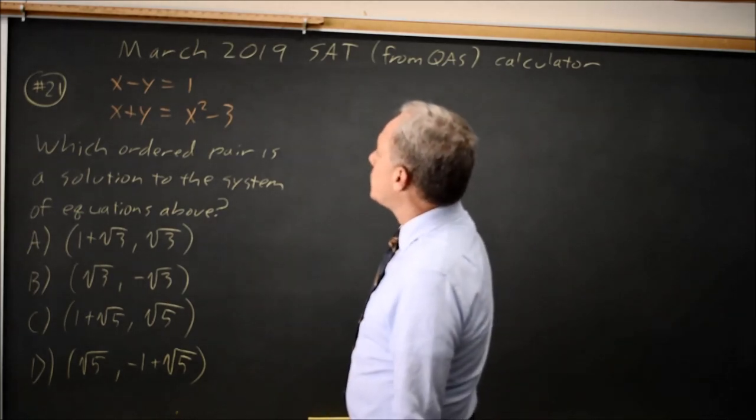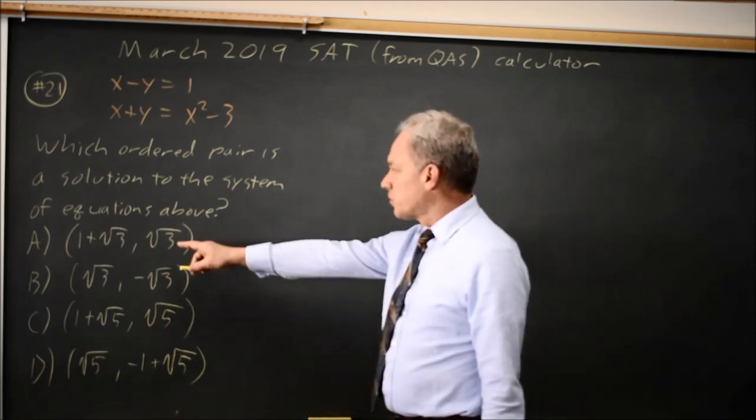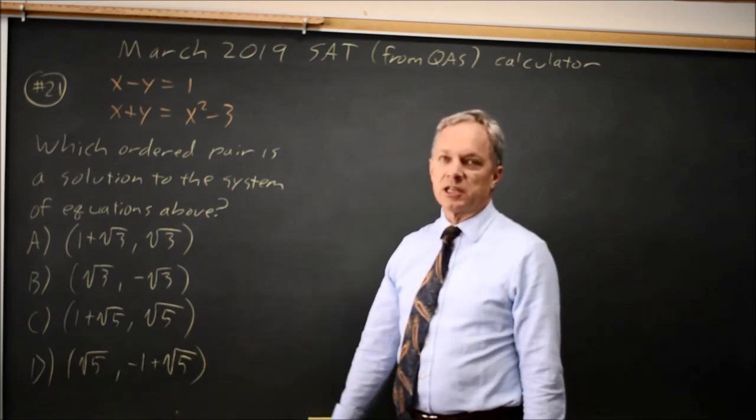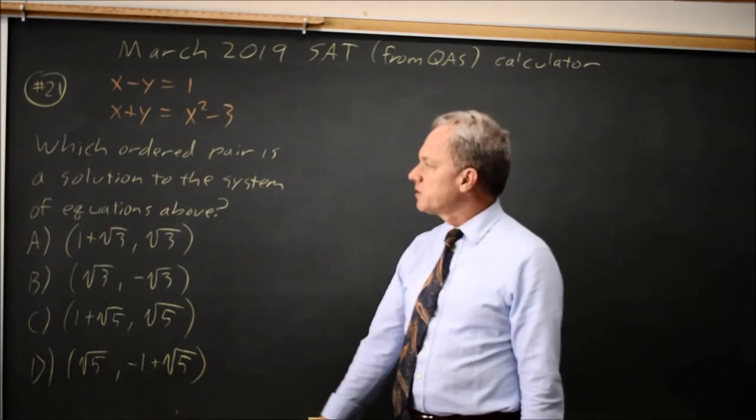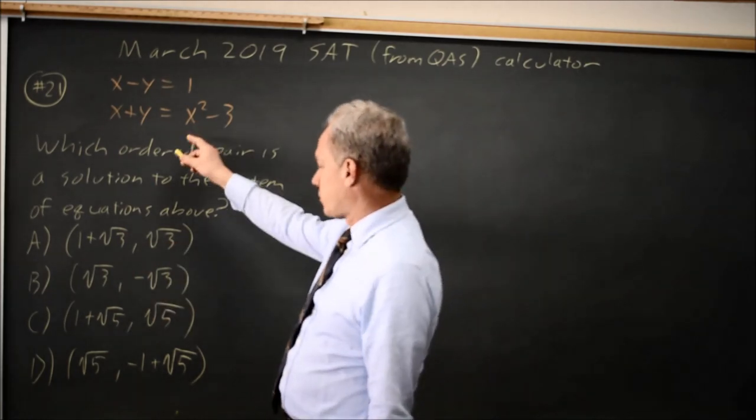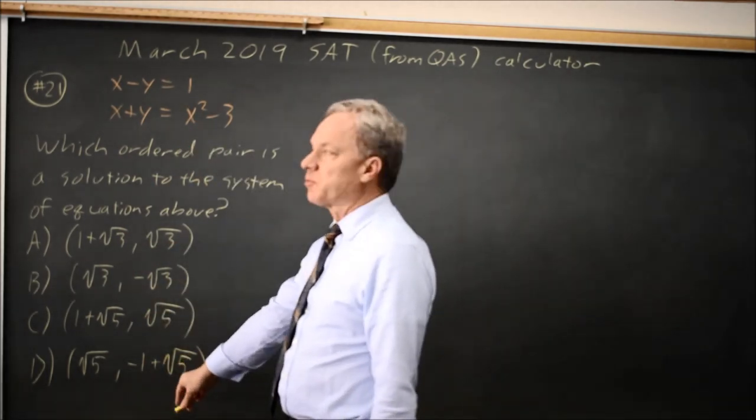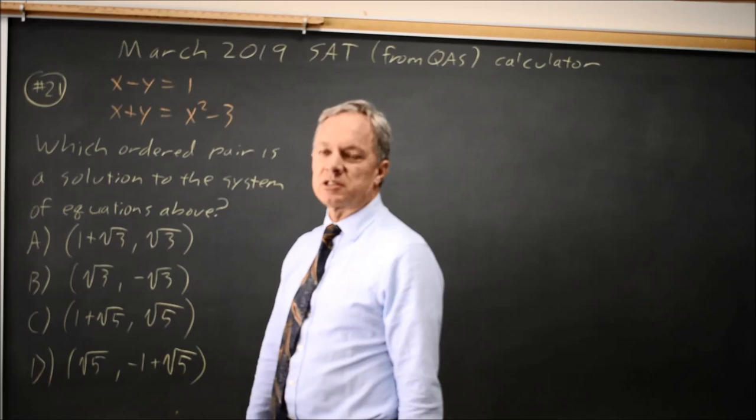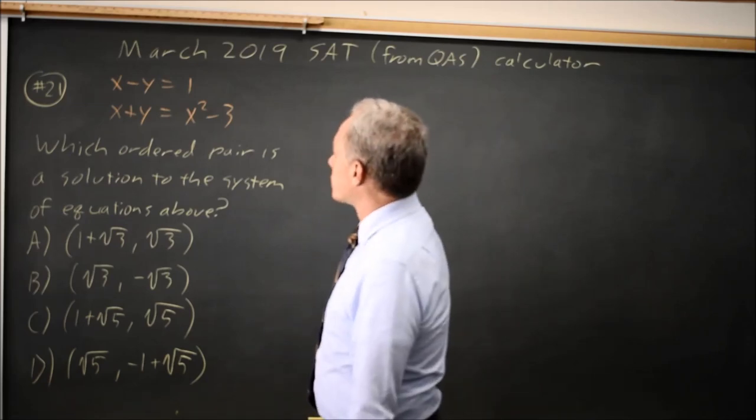To solve this, we have several options. First, we can substitute these values in. That will take a while, particularly substituting things like 1 plus root 3, 1 plus root 5, negative 1 plus root 5 into here for x squared. So I prefer to avoid that.